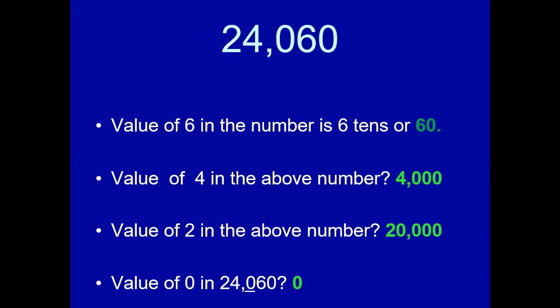Now, for the number 24,060, you should be able to tell the value of each digit. What is the value of 6? It is 60. What is the value of 4? It is 4,000. What is the value of 2? It is 20,000 (two ten-thousands). The value of 0 is 0.